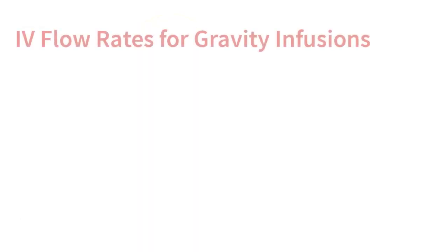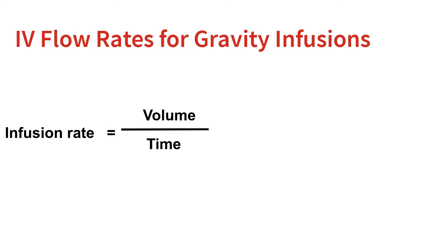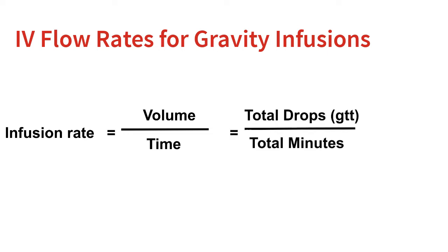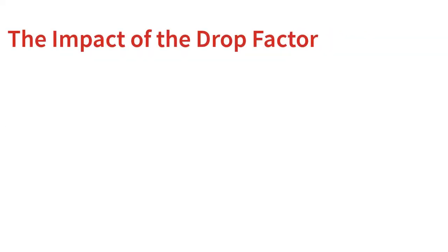When calculating the flow rate for these gravity infusion situations, the nurse will need to consider the rate as a ratio of volume over time. This is no different than the calculations we saw for the IV pump. However, when using gravity, the volume we are interested in is a measure of total drops. The denominator for these calculations is the infusion time in minutes. Together, this ratio will simplify to a unit rate of drops per minute. Before moving on to an IV rate calculation, let's first make sure we understand the drop factor and how it is incorporated into these IV flow rate calculations.